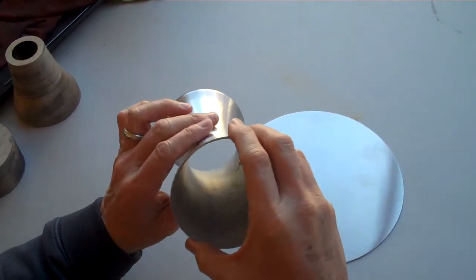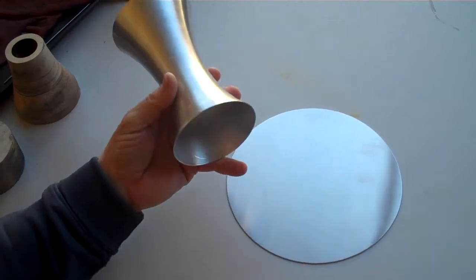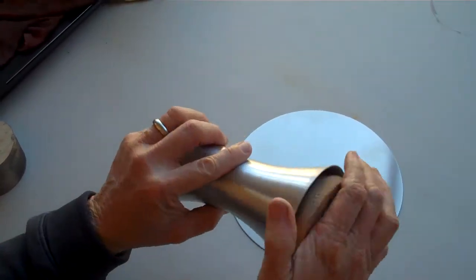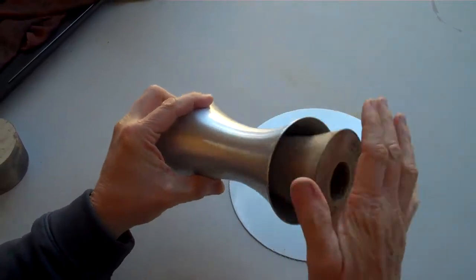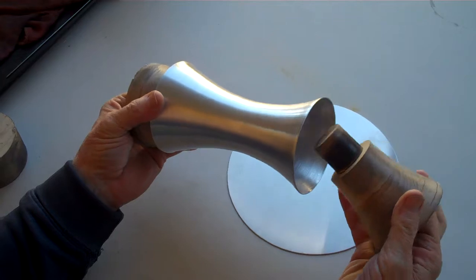The thing that's unique about this is it has negative drafts, so it requires that you have a split tool like this that can come apart, because otherwise you couldn't get it off the tool. So that's how that works.